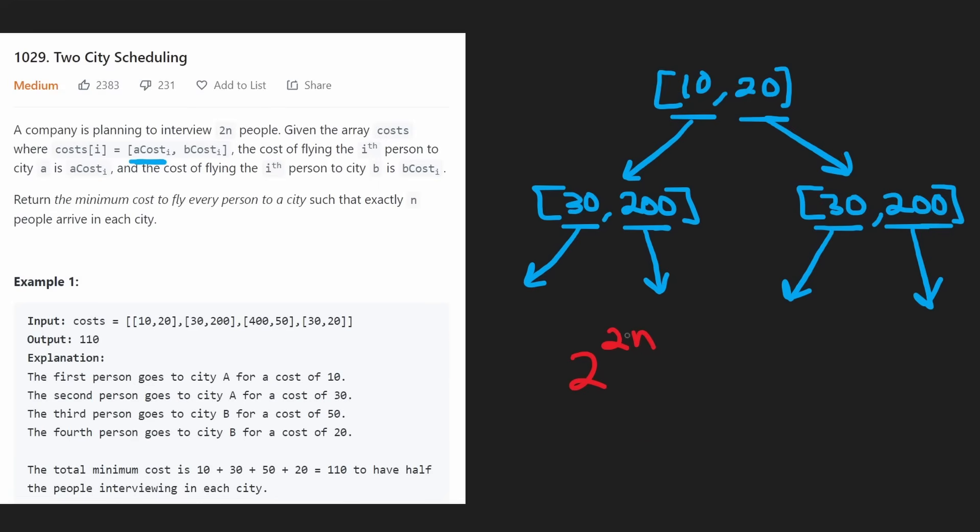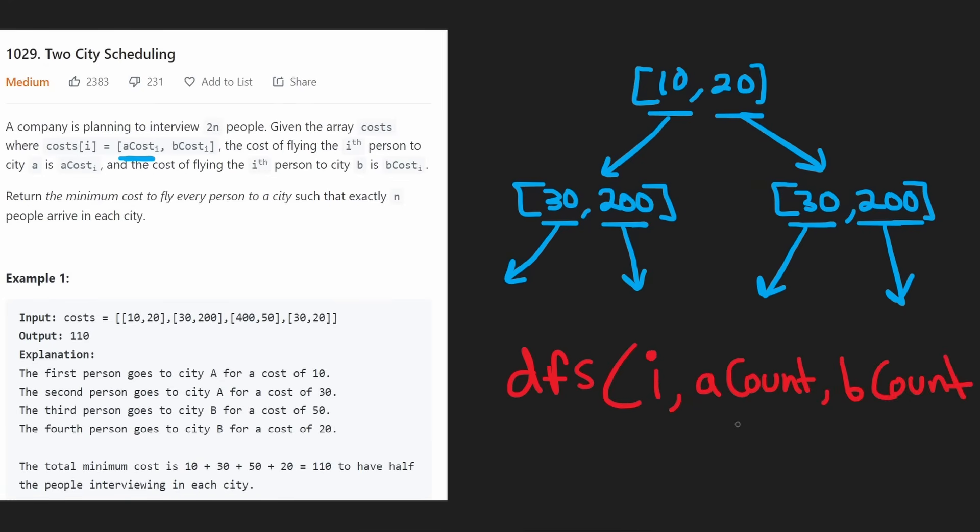You can actually optimize this with caching, which is a dynamic programming technique to make it much more efficient. Suppose we just had a function, a recursive function to do this backtracking - I'll call it DFS. The main parameters we would want to pass into this DFS are i, which is the index that we're at, and also a count and b count, representing the counts of people going to city A and city B.